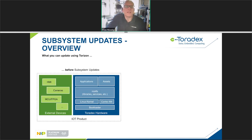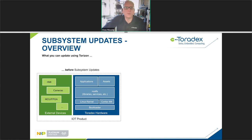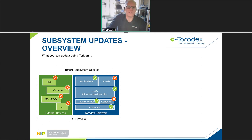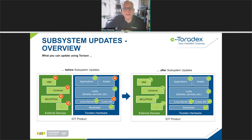What do the updates look like? In a typical IoT product, the components in blue are all onboard Toradex hardware, and the components in green are external. Before subsystem updates, the items in green could not be updated by the Torizon update system — the OS, applications, root file system, kernel, and bootloader were all updatable. Now with the subsystem update feature, we get the ability to update all the other components in the system, as well as things like config files.